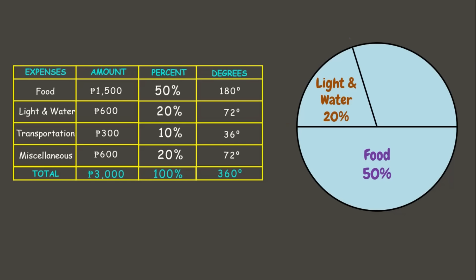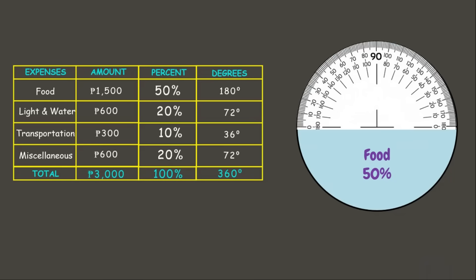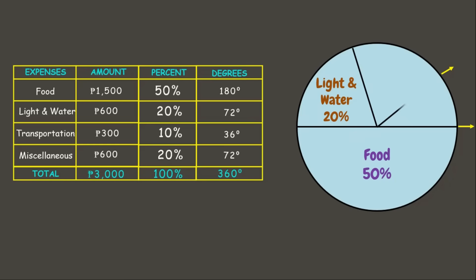Next, transportation is 10 percent or 36 degrees. Using the protractor, we start from zero and count until 36 — we have 30, so we count six more lines. That is our transportation section, 10 percent of the whole. Lastly, miscellaneous is 20 percent or 72 degrees. Since it's the last remaining portion, it automatically fills the rest of the pie graph.